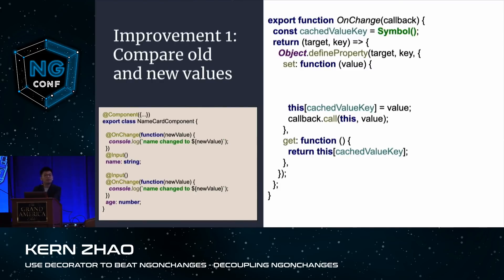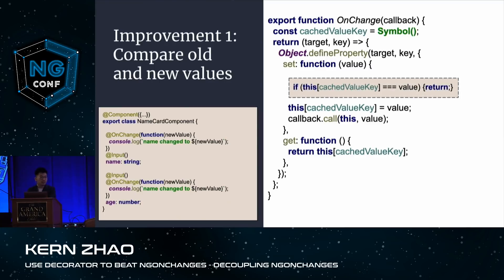Let me improve it further. First improvement: I don't want to trigger the callback function if the old value and the new value are equal. So I just add an if statement comparing the new value and the old value — if they are the same, do nothing.